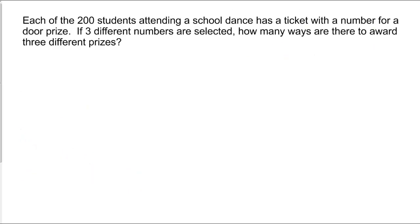Next problem, you've got 200 students attending a dance. You've got a ticket with a number for a door prize. Three different numbers are selected. You want to know how many ways to award the three different prizes. This is a permutation because you're picking them in order. It's not necessarily a group. So this is from 200 items. We're arranging three. And I could just pop that into a calculator. Remember, this is NPR in this case.